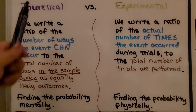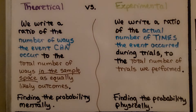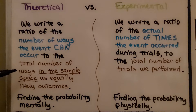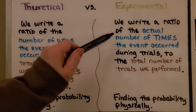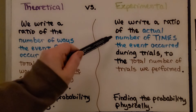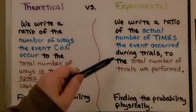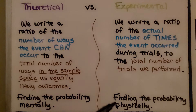So here we have theoretical versus experimental. For theoretical, we write a ratio of the number of ways the event can occur to the total number of ways in the sample space as equally likely outcomes — we're finding the probability mentally. For experimental, we write a ratio of the actual number of times the event occurred during trials to the total number of trials we performed — we're finding the probability physically.